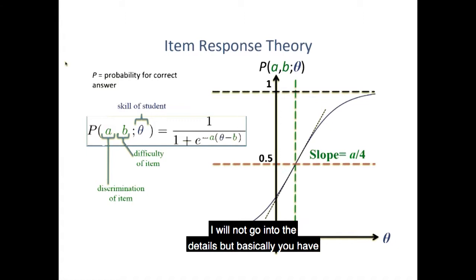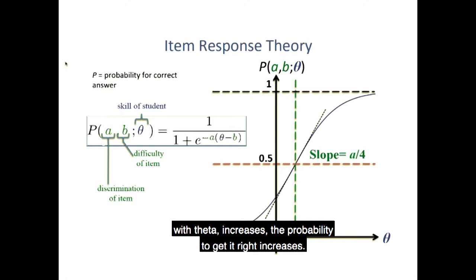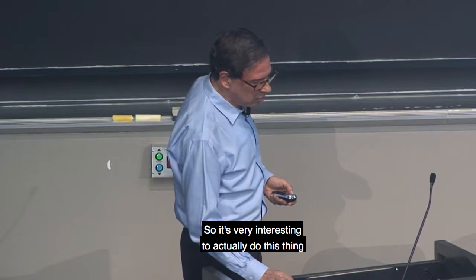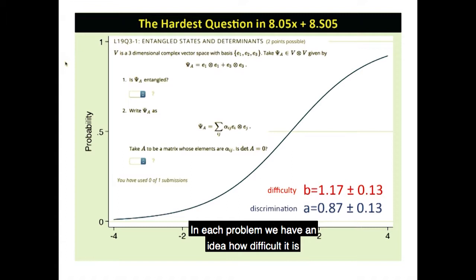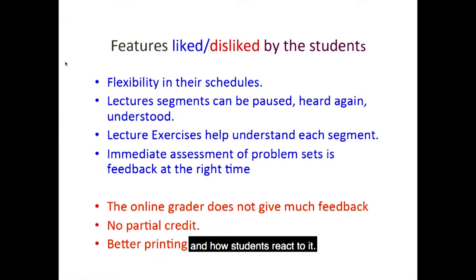I will not go into the details. But basically, you have three parameters to fit. A, a discrimination of slope. Here, this function is the probability that the student will get the answer right. So as the ability of the student plotted here with theta increases, the probability to get it right increases. Then for each problem, you get the parameter B that characterizes the difficulty, and A with the slope, the discrimination. So it's very interesting to actually do this thing with an enormous database. And each problem, we have an idea how difficult it is, and how students react to it.